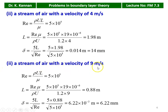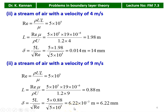Case 3 — air at 9 m/s. Re = ρUL/μ = 5 × 10⁵. Laminar length L = (5 × 10⁵ × 19 × 10⁻⁶) / (1.2 × 9) = 0.88 m. δ = 5 × 0.88 / √(5 × 10⁵) = 6.22 × 10⁻³ m = 6.22 mm. Comparing: for air at lower velocity the boundary layer thickness is greater; at higher velocity it reduces. For water at 4 m/s, the boundary layer thickness is very small (0.88 mm).